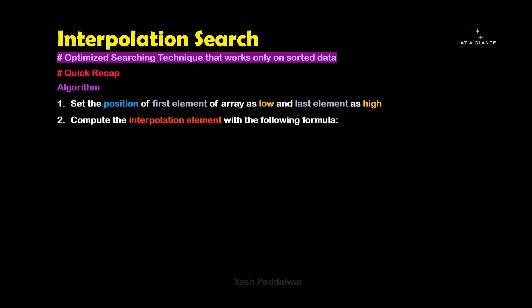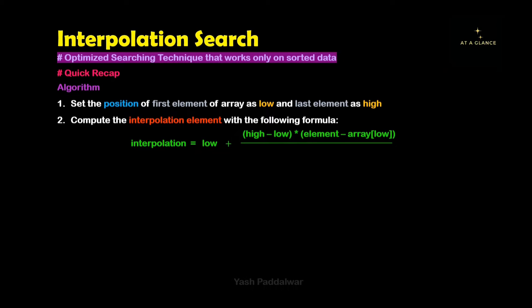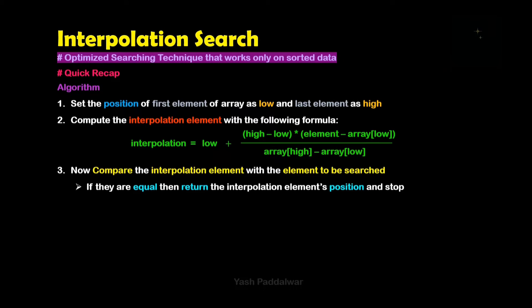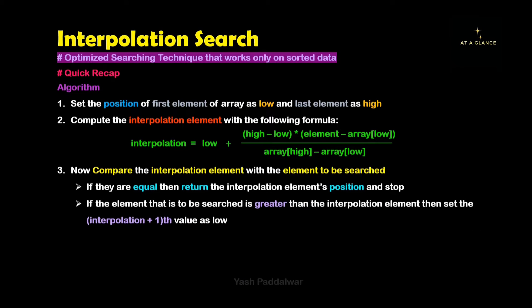Now let's have a quick recap of the algorithm. The first step is to declare the first element's position as low and the last element's position as high. Next, we compute the interpolation element's position with the formula displayed on the screen. Then we compare the element at the interpolation position with the element to be searched. If both are equal, we return the interpolation position and stop because the element is found.